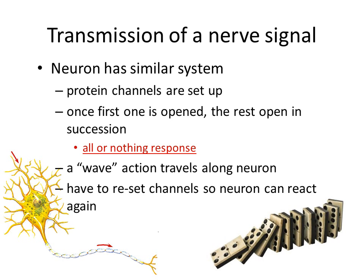A wave action travels along the neuron and you have to reset the channels so the neuron can react again. This is kind of like dominoes — once the first one is knocked down, you have to stop and reset it in order to send the signal again.